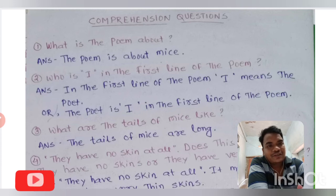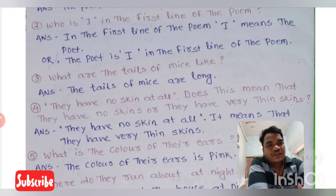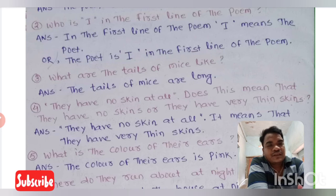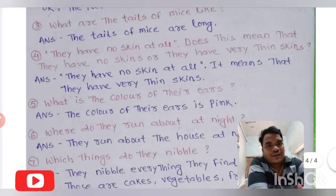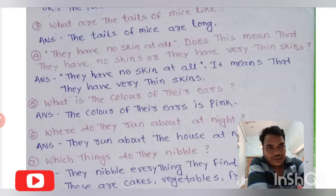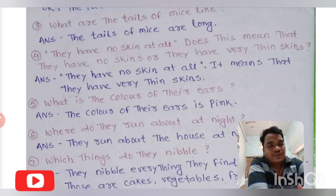What are the tails of mice like? The tails of mice are long. Another question: 'they haven't any skin at all' — does it mean they have no skin, or they have very thin skin? The answer is it means they have very thin skin.